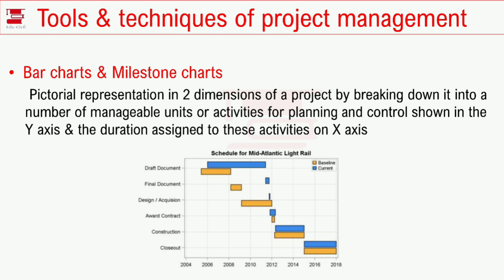Let's get a construction timeline. I have a construction starting in 2004. What I have done is an excavation. Excavation is one of the foundations. Then, the first part of the work — painting — and each task is split into an activity. The activity is split into time on the X axis, and the Y axis is represented in the bar chart.